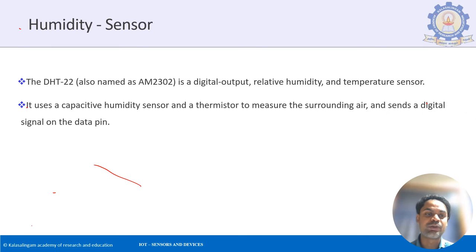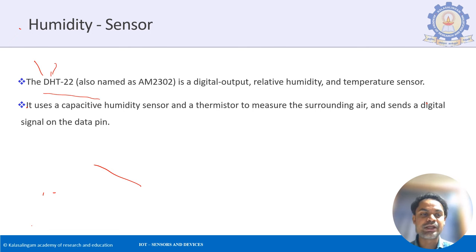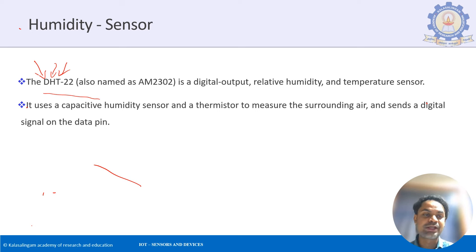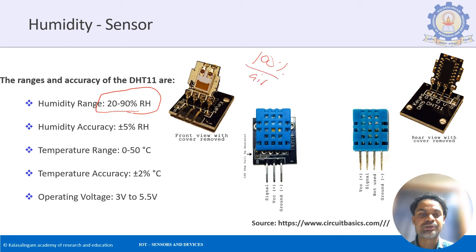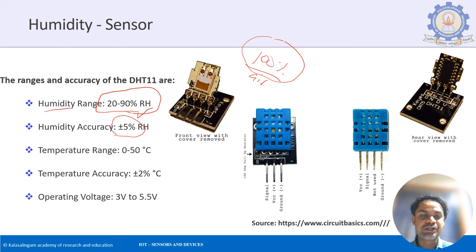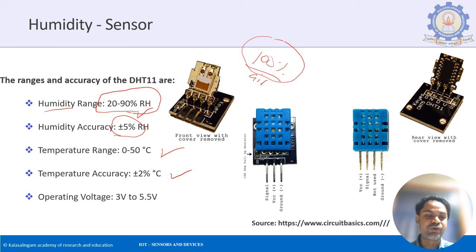The DHT22 humidity and temperature sensor — also named AM2302 — is a digital sensor. It converts the analog quantity into digital by itself and gives the data to the microcontroller via a digital pin. It measures humidity from 20 to 90% with a tolerance of ±5%, and temperature from 0 to 50°C with a tolerance of ±2%. Operating voltage is 3 to 5.5 volts.